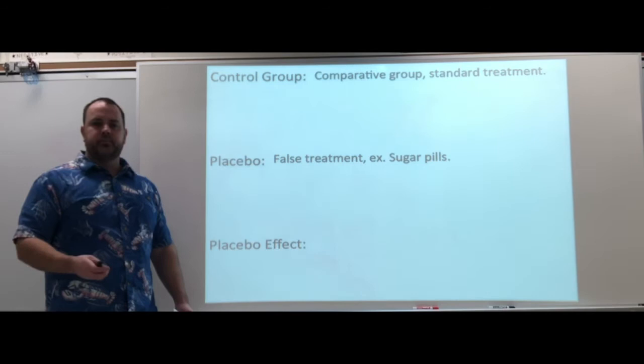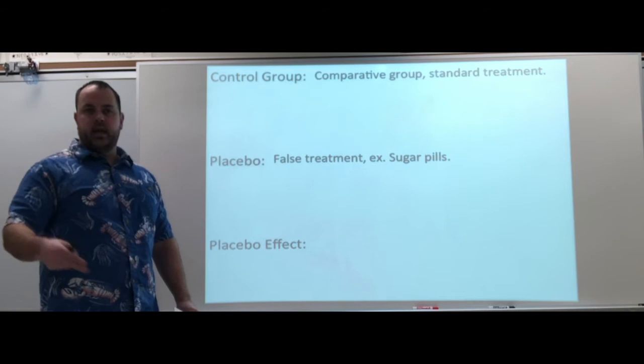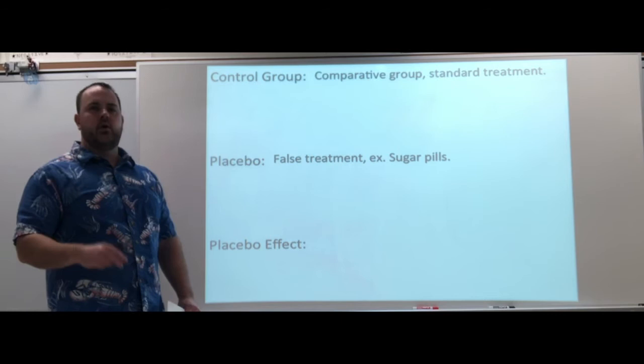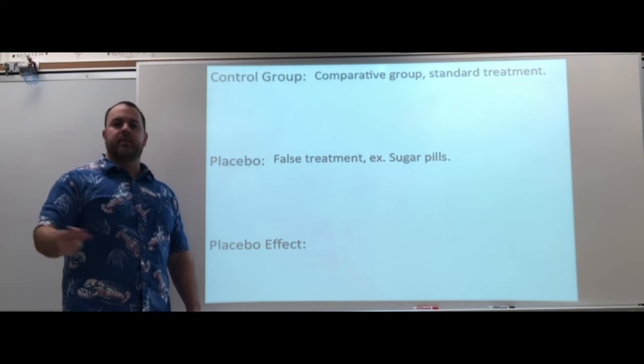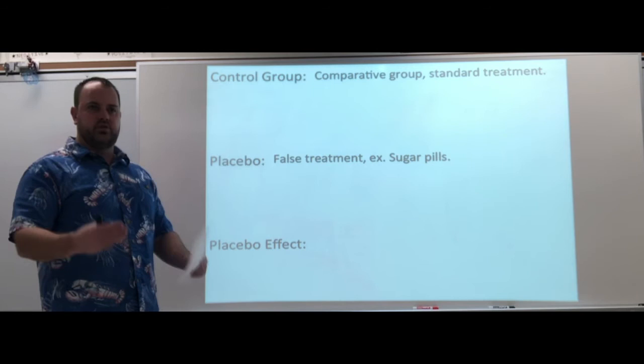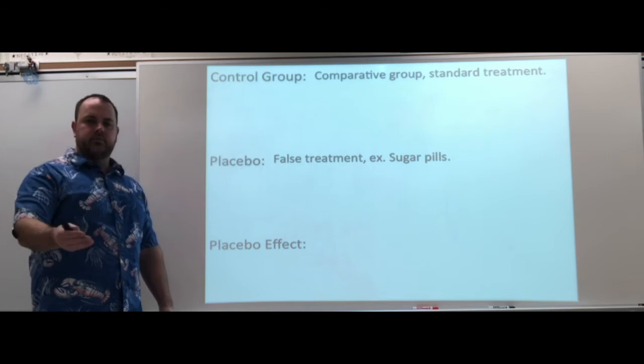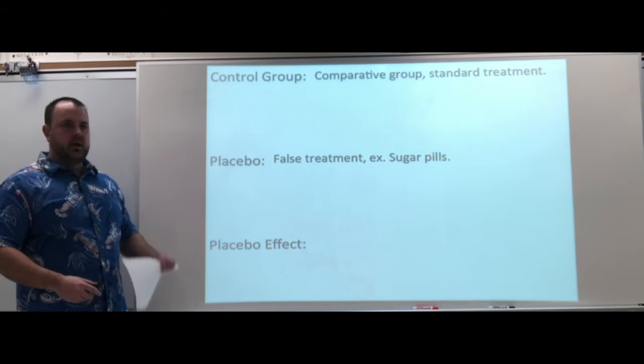A placebo is considered a false treatment — something like a sugar pill. Every observational unit should be treated the same. The false treatment, the placebo, ensures that everyone is getting a treatment and all treatments are identical across observation units. So at the end, everyone has gone through all the same things. Now when we look at the response, if every observation unit is treated the same, we know those responses are going to reflect what actually happened — did the explanatory variable actually have an effect on the response?